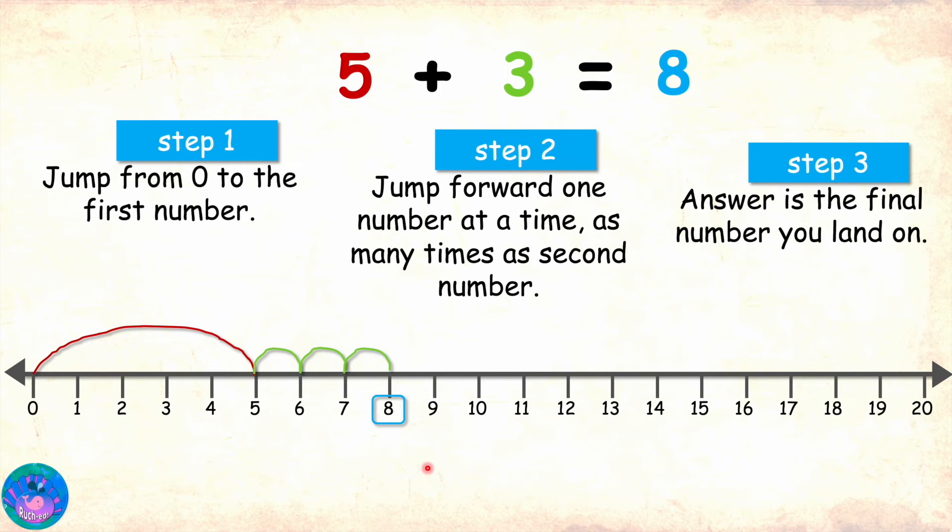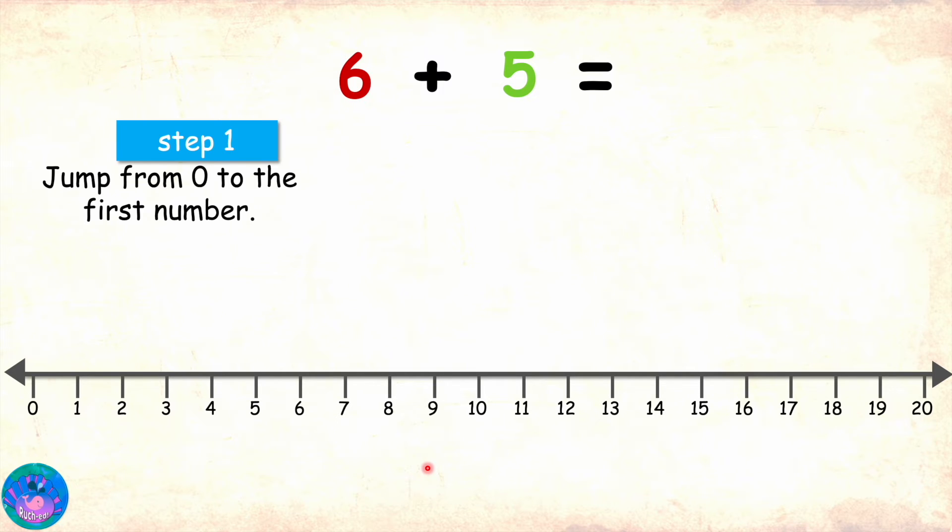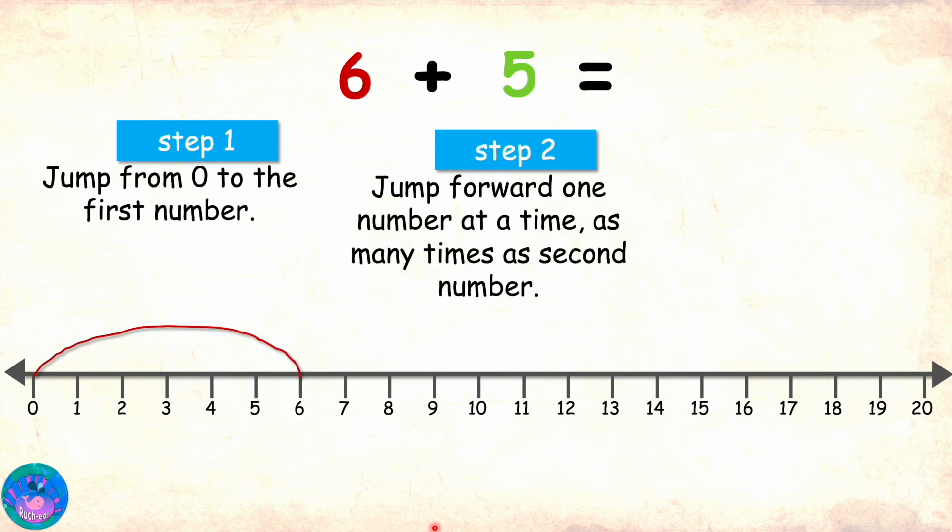Why don't you try now? Solve 6 plus 5. Okay. So, the first step is to jump from 0 to the first number. Our first number is 6 and here is the big jump. Step 2 is to jump forward one number at a time as many times as the second number. Our second number is 5.